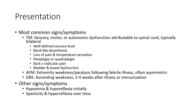Most common signs and symptoms include sensory, motor, or autonomic dysfunction attributable to the spinal cord, sensory deficits, gait ataxia, loss of pain and temperature sensation, paraplegia or quadriplegia, back or radicular pain, and bladder and bowel dysfunction. AFM presents with extremity weakness and paralysis following febrile illness, often asymmetric. GBS presents with ascending weakness two to four weeks after illness or immunization.